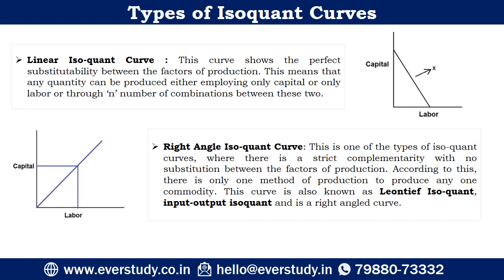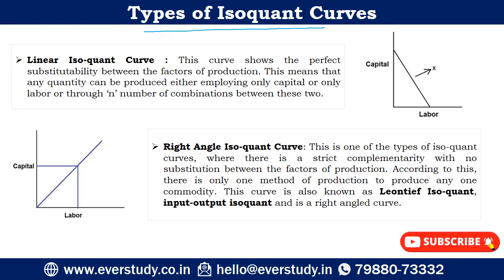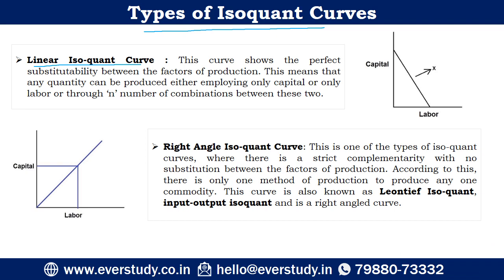Now let's discuss the types of isoquant curves. The first one is the linear isoquant curve. This is quite an unrealistic approach, where in the production process, one factor is completely substituting the other factor.